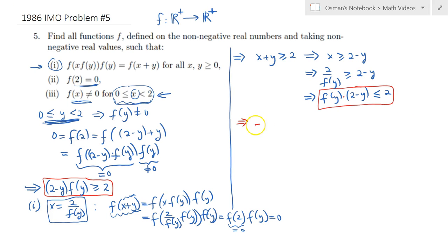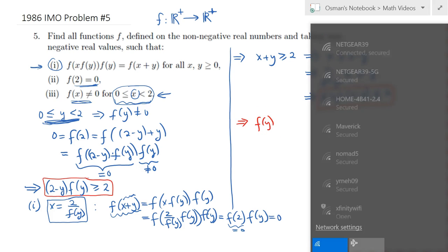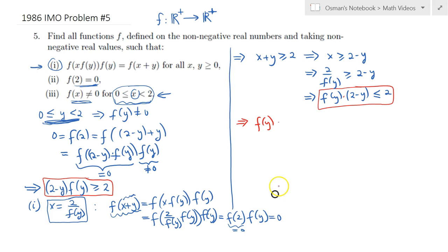So this implies that f of y itself is actually equal to 2 over 2 minus y when y is in the range, right? And when y is between 0 and 2, now the easy part is the remaining part, when, what happens when y is greater than or equal to 2?